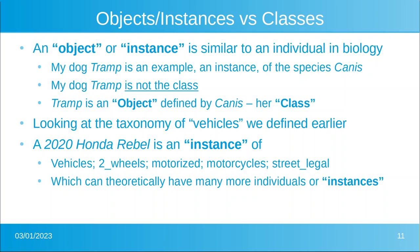An object or instance is very similar to an individual. My dog Tramp is an example — an instance — of the species Canis. She is not the species itself; she is an embodiment of canine, defined by it. She is an instance of Canis lupus. There can be many instances of Canis lupus — everyone's dog is an example.